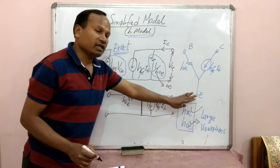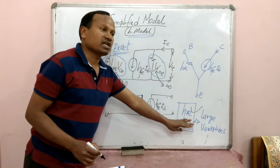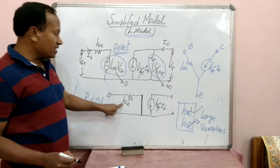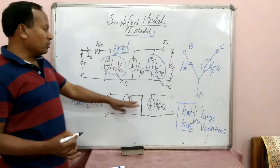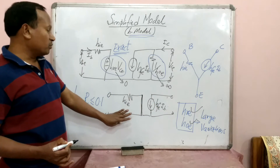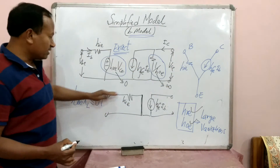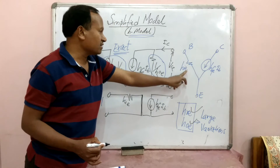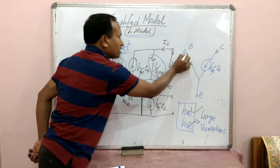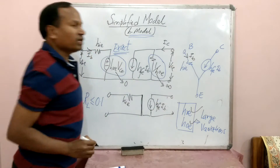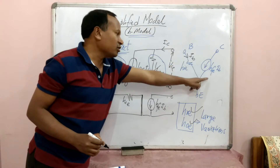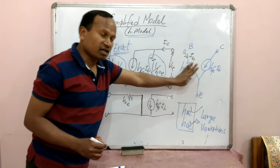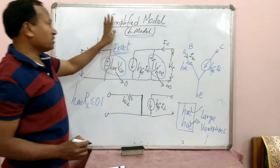If we neglect these two hybrid parameters which have large variation in the exact model, the resulting model simply has HIE and HFE·IB. Sometimes the approximate hybrid model is drawn like this: there is a base, a collector, and an emitter. From base to emitter there is HIE, towards the collector there is HFE·IB. The current flowing at the base terminal is IB, and the current at the collector terminal is HFE·IB. This is called the simplified or approximate hybrid model for the common emitter amplifier.